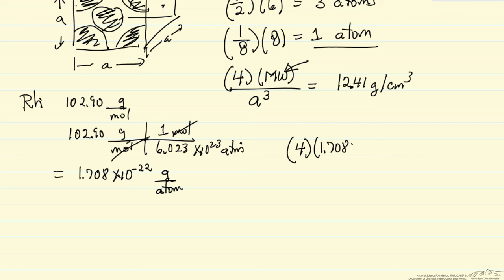1.708 times 10 to the minus 22nd grams per atom. So if I want to be careful with units, I should write this as four atoms. Separate these two.